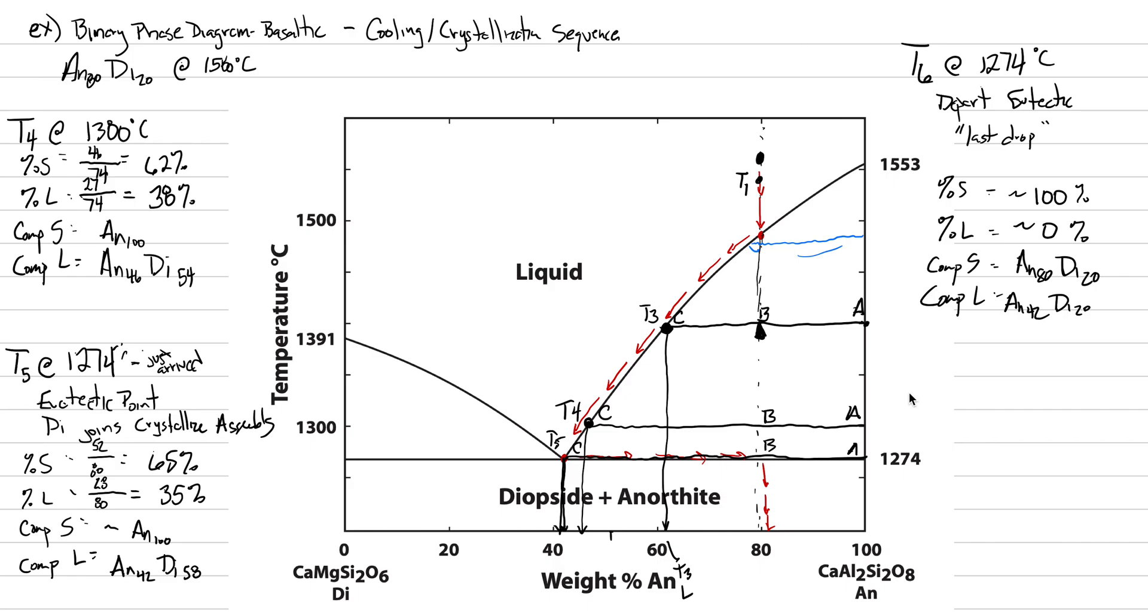T7, you could have this be at 1,000 degrees C, 800, or 0. Let's do the example. This is all very easy because we're below the solidus. This line is called the liquidus, and this line that's straight across is called the solidus. Since we're at a temperature below the solidus, we are at 100% solid, 0% liquid. The composition of the solid is the composition of the starting material, AN80 DI20. The composition of liquid is not applicable because there is none there.